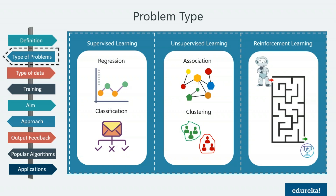In reinforcement learning, the key difference is that the input itself depends on the actions we take. For example, in robotics, a robot may start without knowing anything about its surroundings, but after performing certain actions it learns more about the world. The world it perceives depends on whether it chooses to move right, forward, or backward. The robot is the agent, its surroundings are the environment, and for each action it takes, it can receive a reward or a punishment.